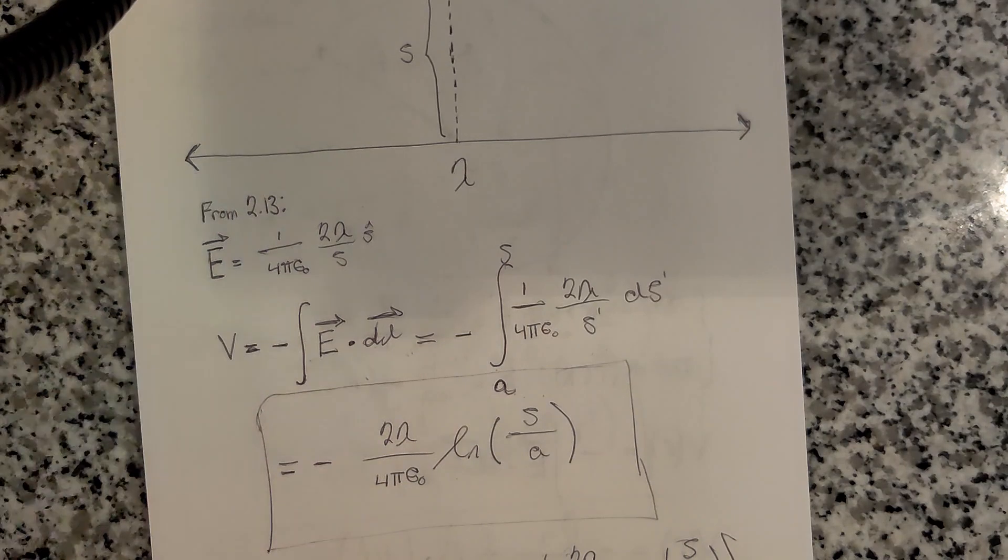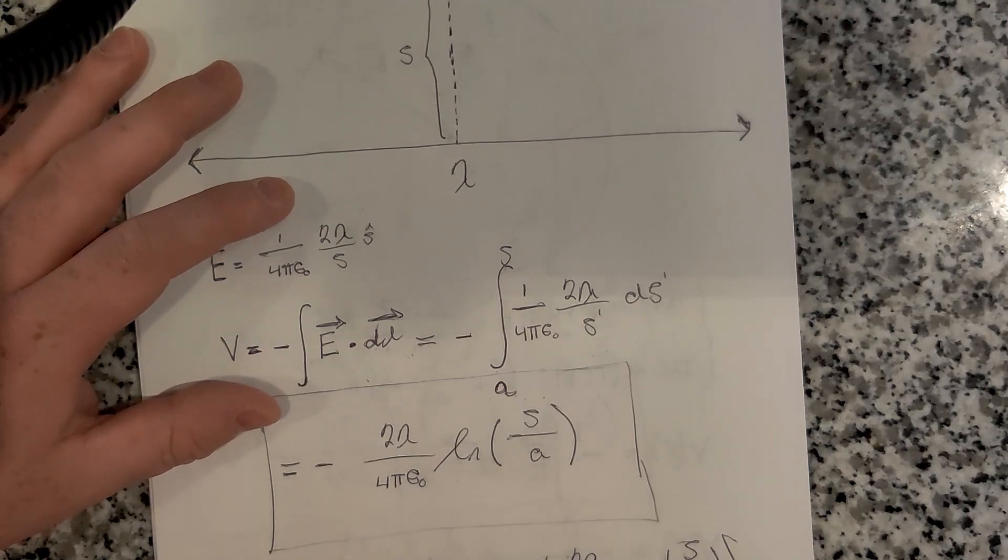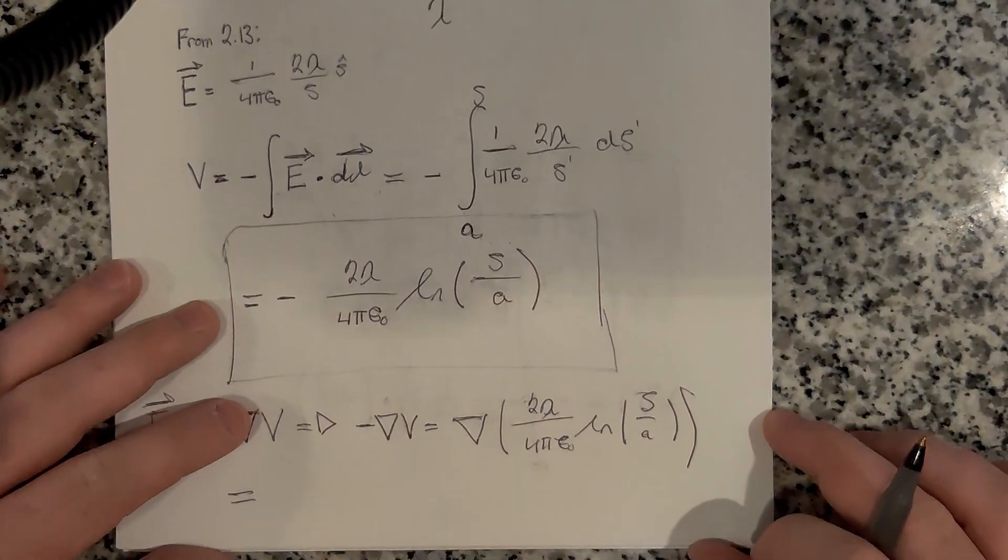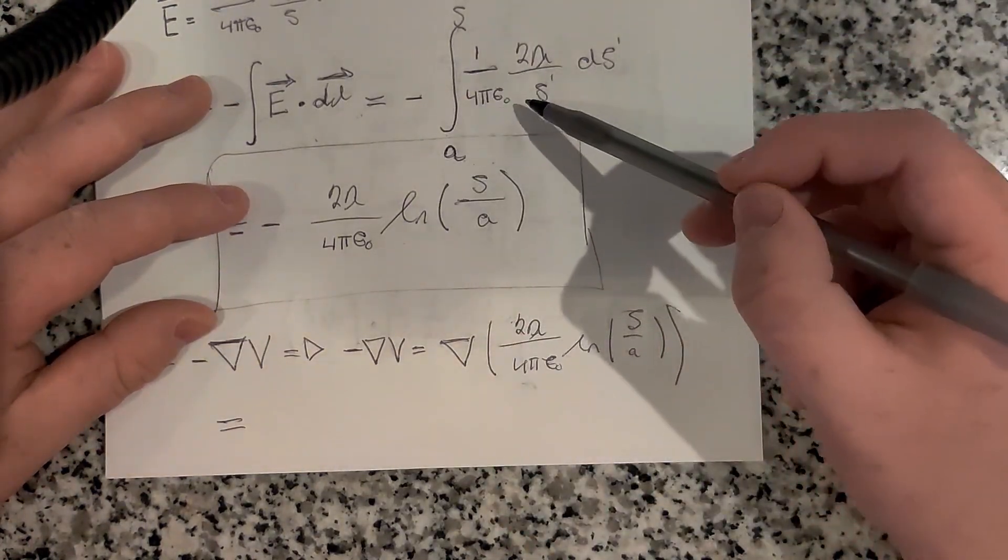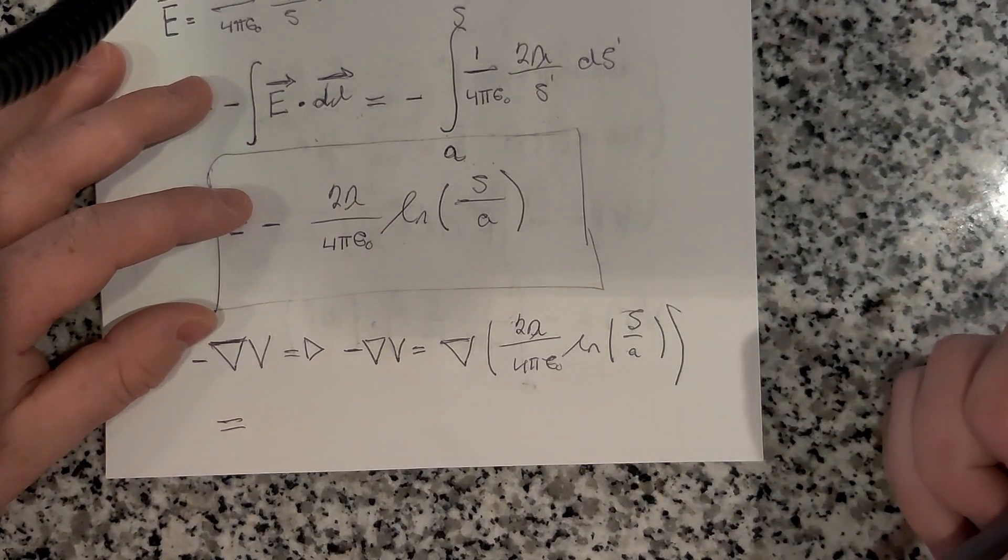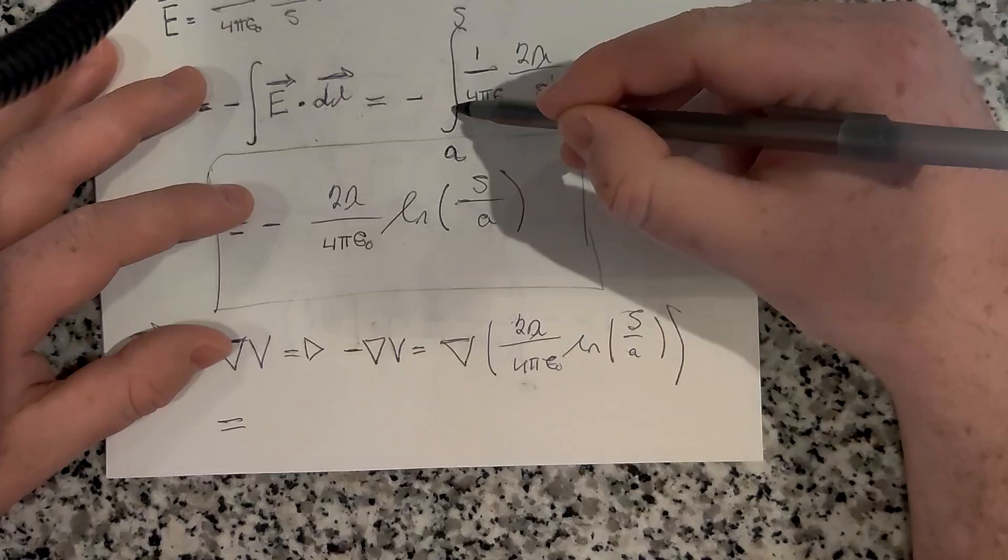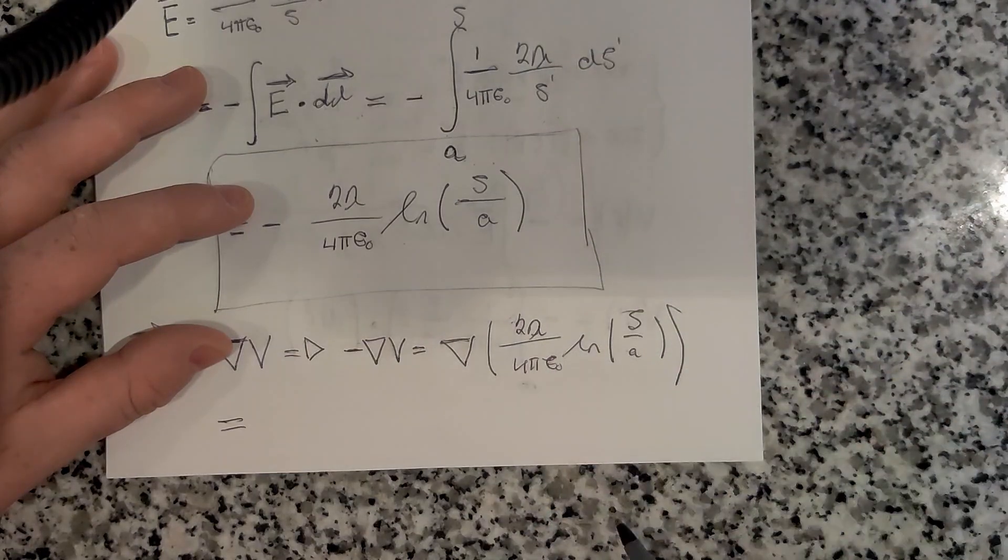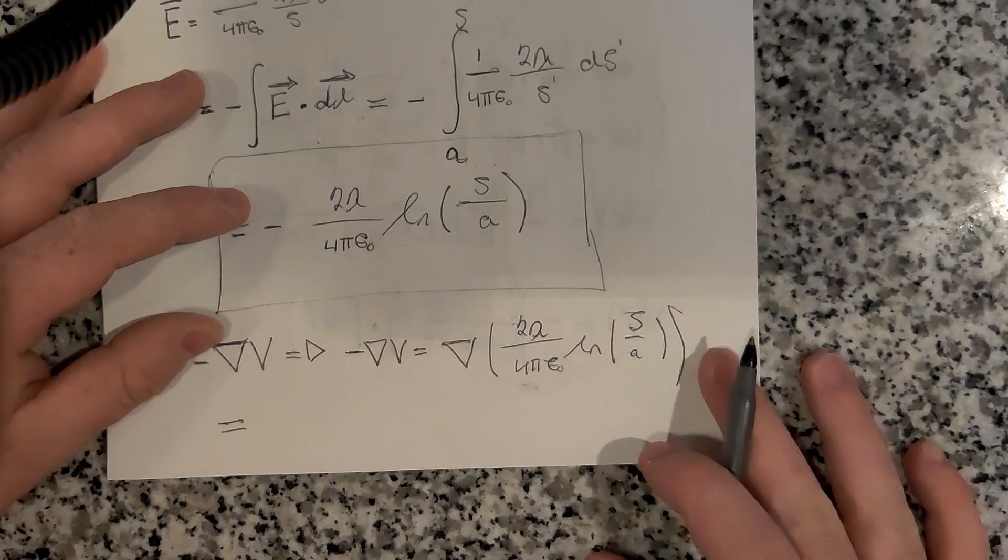The derivative of the natural log function is also a standard thing. We already know if the integral of 1 over s is the natural log, then the derivative of the natural log should be 1 over s. That's just how it works, because they're inverses of each other.